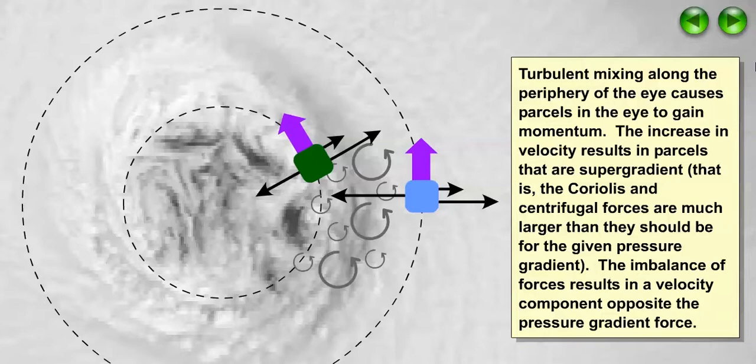Turbulent mixing along the periphery of the eye causes parcels in the eye to gain momentum. The increase in velocity increases the magnitude of the Coriolis and centrifugal forces, resulting in parcels that are super gradient. When a parcel is super gradient, the Coriolis and centrifugal forces are much larger than they should be for the existing pressure gradient.